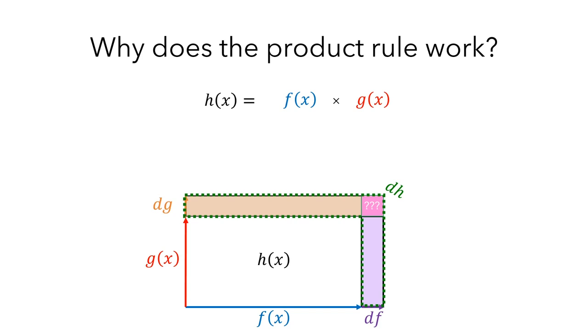You might also be wondering about this tiny pink rectangle. Since both df and dg are really small, the area of this rectangle is so small that we're going to disregard it when we're thinking about the rate at which the area is increasing.